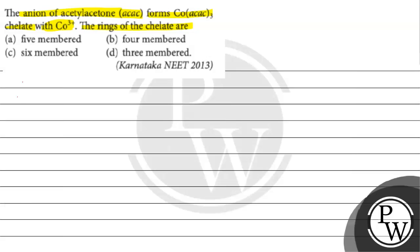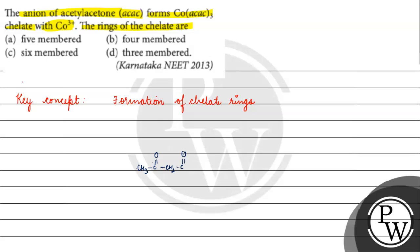The key concept for this question is the formation of chelate rings. Now, what is given? Acetyl acetone — acetyl means CH₃-CO, and acetone means CH₂-CO-CH₃.